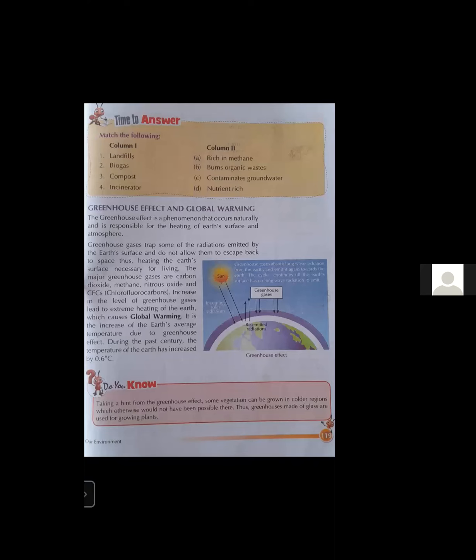During the daytime, sunlight and heat come from the sun and the Earth gets heated up. During the night time, this heat tries to escape from the Earth, causing the Earth to cool. But there are some gases which trap and absorb that heat and reflect it back towards the Earth's surface, maintaining the temperature at night. This phenomenon is known as the greenhouse effect.